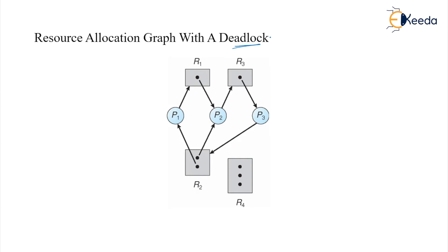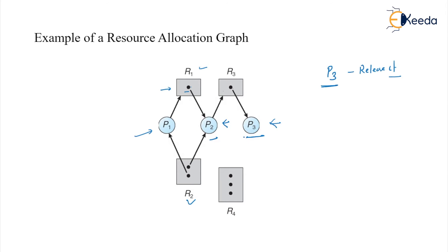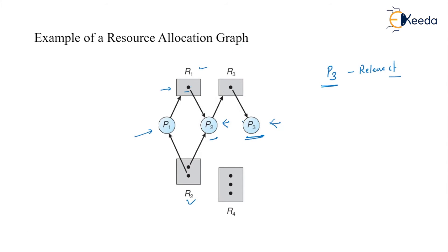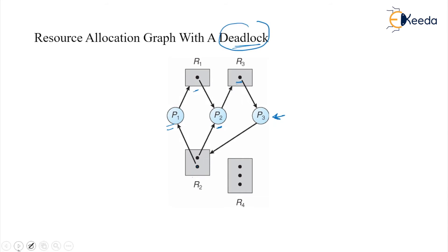Now look at a deadlock situation. This is somewhat similar, but here P3 is now requesting one resource of R2. P3 cannot be allocated because one instance is allocated to P1 and another to P2. So P3 will not be able to complete anything and will hold R3. P2 is looking for R3 and holding R1 and R2. P1 is holding one R2 and looking for R1 — this entire situation leads into a deadlock. Compare both diagrams: before, P3 was alone and everything completed smoothly; here, we are stuck.